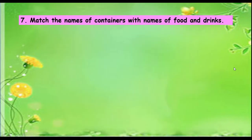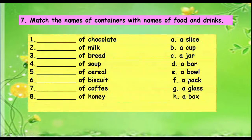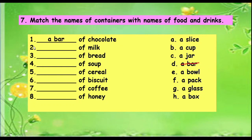The next activity: match the names of containers with the names of food and drinks. We have: chocolate, milk, bread, soap, cereal, biscuit, coffee, and honey. And in this column: a slice, a cup, a jar, a bar, a bowl, a pack, a glass, and a box. For example, chocolate — what container? A bar of chocolate.